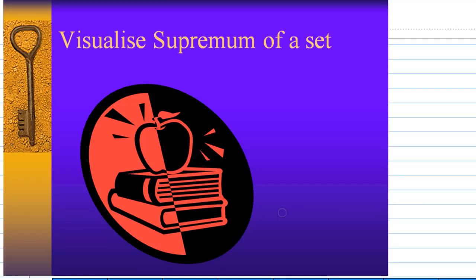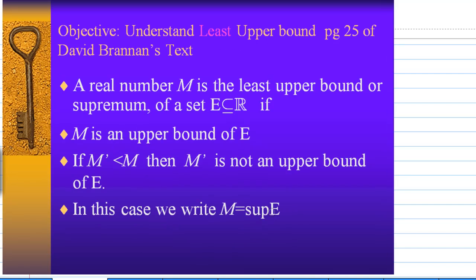The purpose of this recording is to show you how to visualize the supremum of a set. According to David Brennan's text, page 25, a real number M is the least upper bound or supremum of a set E belonging to the real numbers if M is an upper bound of E, and if M' is less than M, then M' is not an upper bound of E. In this case, we write M equal to sup E.